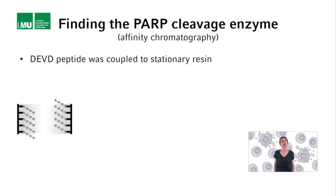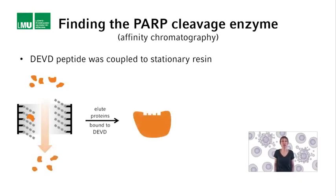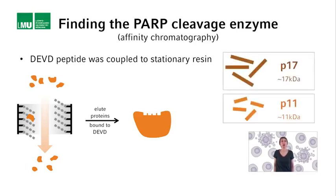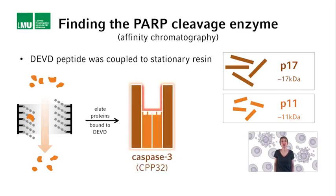As a next chromatography step, they therefore took a resin to which the DEVD peptide was coupled, and with this they fished out of the mixture of negatively charged proteins those that could bind to DEVD. Chromatography that takes advantage of the ability of two molecules to interact is also referred to as affinity chromatography. When they checked on a polyacrylamide gel how many proteins could bind to DEVD, they found only two: one of a molecular mass of around 17 kDa and one of around 11 kDa.